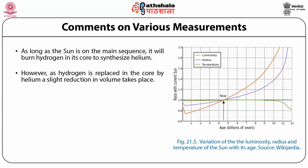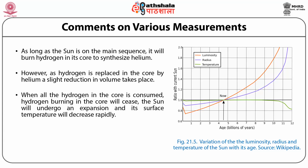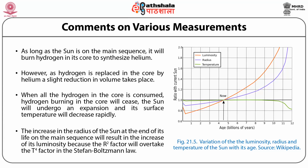The figure here shows the variation of the luminosity, radius, and temperature of the Sun with its age — luminosity represented by the red line, radius by the blue line, and temperature by the green line. When all the hydrogen in the core is consumed, hydrogen burning will cease and the Sun will undergo expansion and its surface temperature will decrease rapidly. The increase in the radius of the Sun at the end of its main sequence life will result in an increase of its luminosity, because the R² factor will overtake the T⁴ factor in the Stefan-Boltzmann law.